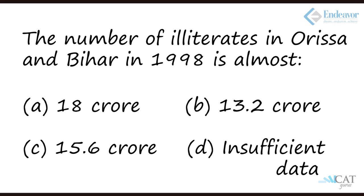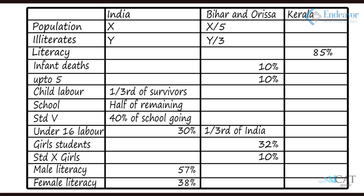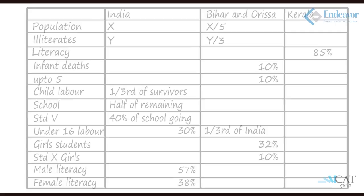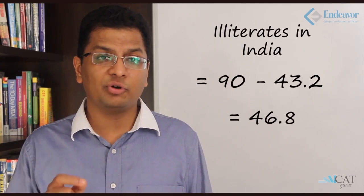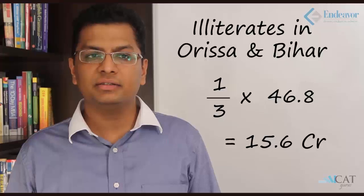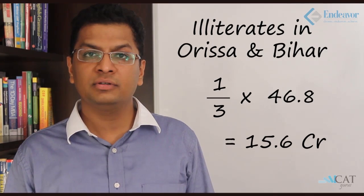Question 7: The number of illiterates in Orissa and Bihar in 1998. From the table, illiterates in Bihar and Orissa = y/3, which is one third of India's illiterates. From the previous question, literates in India = 43.2 crores, so illiterates = 90 − 43.2 = 46.8 crores. One third of that gives illiterates in Orissa and Bihar = 15.6 crores.